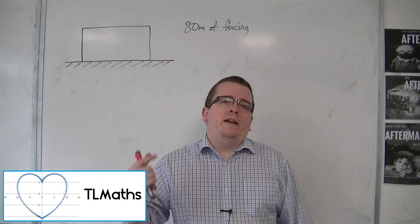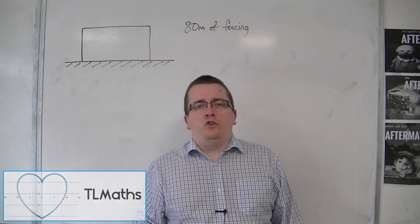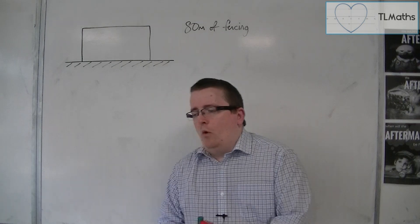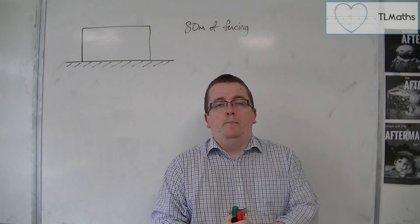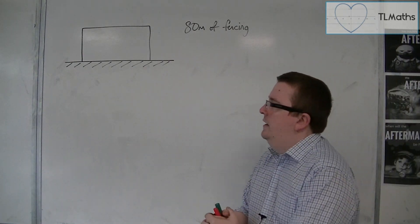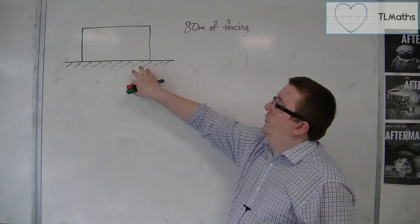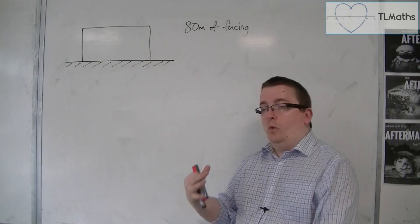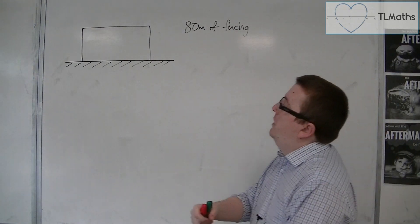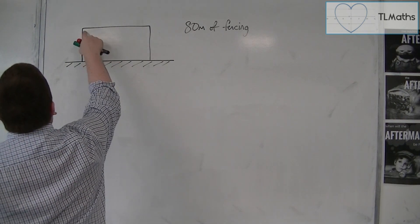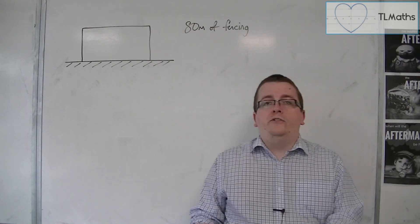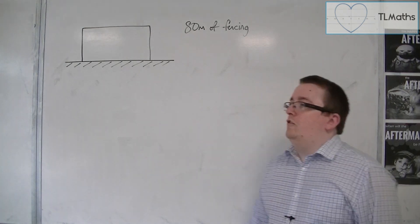I want to start this section by looking at an optimization problem. What we have is a farmer, and they want to build a rectangular field. They have 80 meters of fencing, and they want to put it one side against this brick wall. So one of the sides of the rectangle is already sorted out, it's already there, and I'm going to put the fencing in such a way to make a rectangle. And what we want to do is we want to optimize the total area within that rectangle.